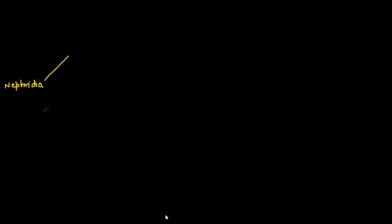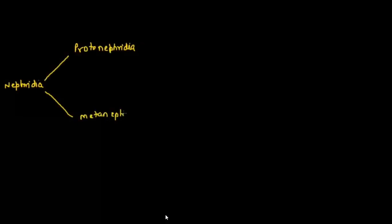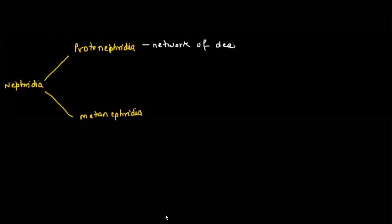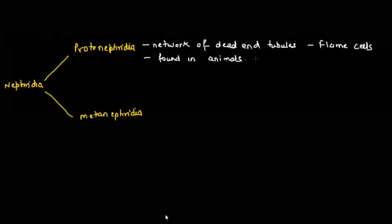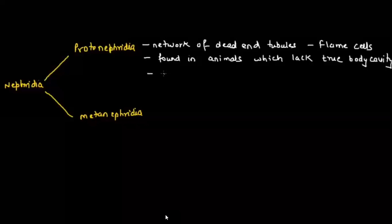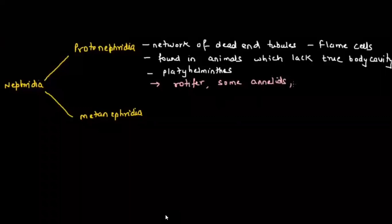There are two types of nephridia: protonephridia and metanephridia. Protonephridia are networks of dead-end tubules — examples are flame cells. Protonephridia are found in animals which lack a true body cavity, i.e., they are pseudocoelomates. Examples include platyhelminthes, rotifers, some annelids, and amphioxus.